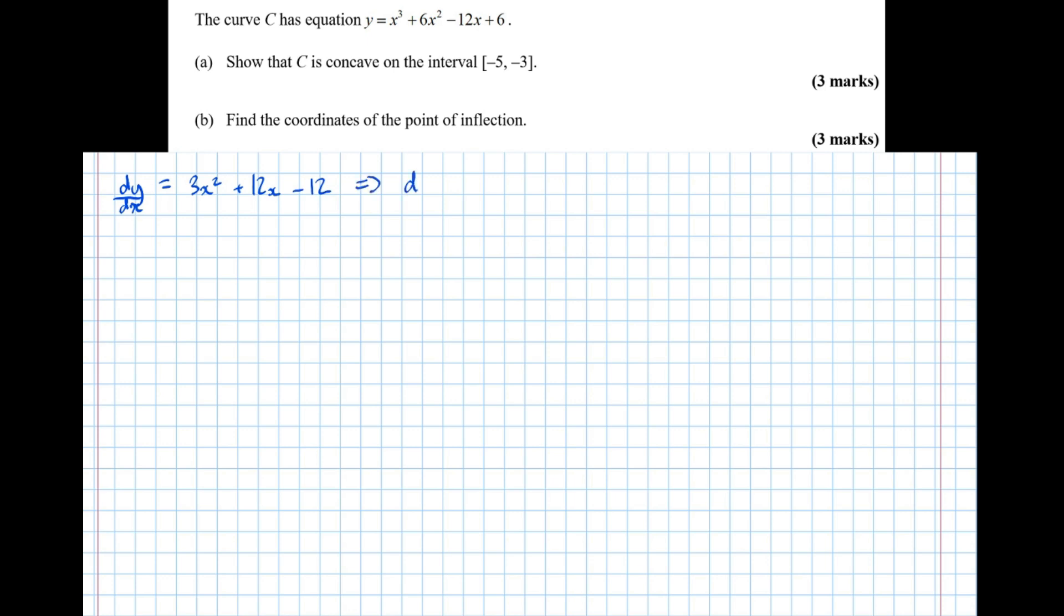Differentiating again, d2y by dx squared equals 6x plus 12.